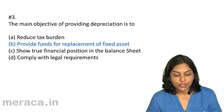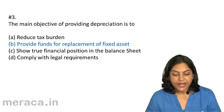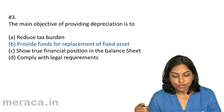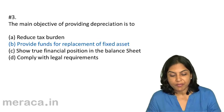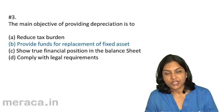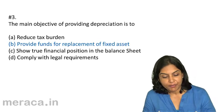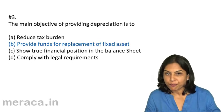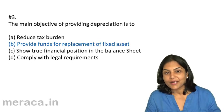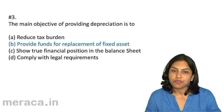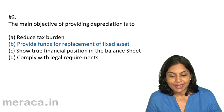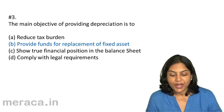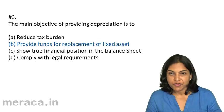It does help to reduce tax burden, and to show the true financial position, and to comply with legal requirements — these are also objectives of providing depreciation. However, when we are given a choice of four and need to pick only one, we pick the most important one. Therefore, the correct answer is 3b: provide funds for replacement of a fixed asset.